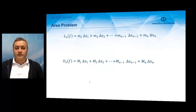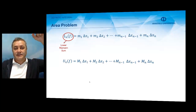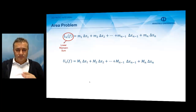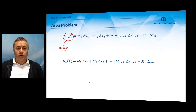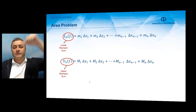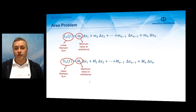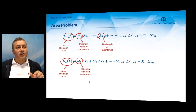Now we construct two sums which are very important in the definition of the integral. The first one is Lₙ of f, called the lower Riemann sum, constructed using the base of each subinterval and the height as the minimum value of the function. The mᵢ's are the minimum values of the function at each subinterval. We also construct the upper Riemann sum, where the height is the maximum value of the function f at each subinterval — the capital Mᵢ. Δx₁, Δx₂, ..., Δxₙ are the lengths of the bases, and in general we choose these lengths to be equal.